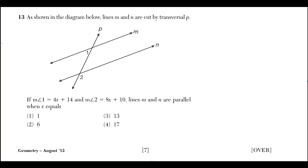As shown in the diagram below, lines M and N are cut by transversal P. If the measure of angle 1 is equal to 4x plus 14, and the measure of angle 2 is equal to 8x plus 10, lines M and N are parallel when x equals what?